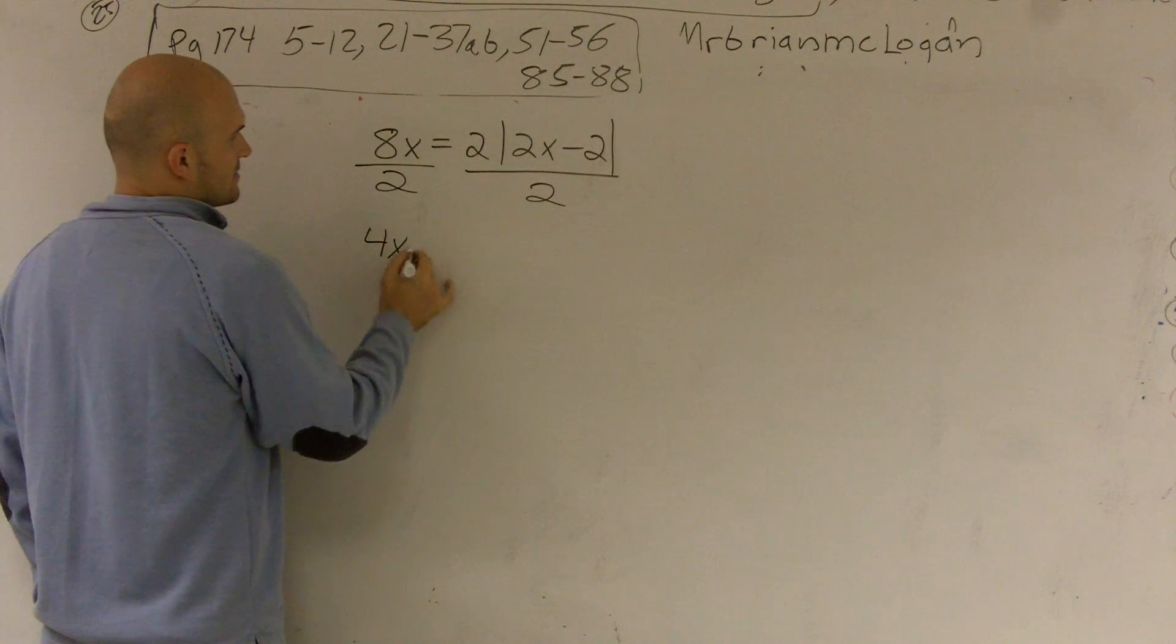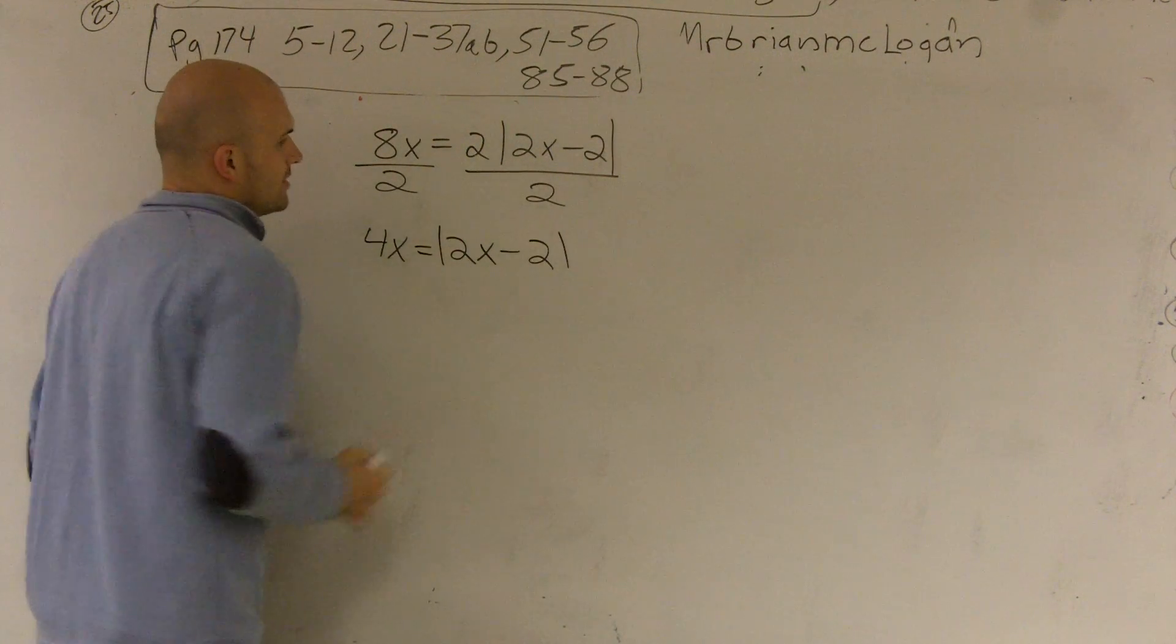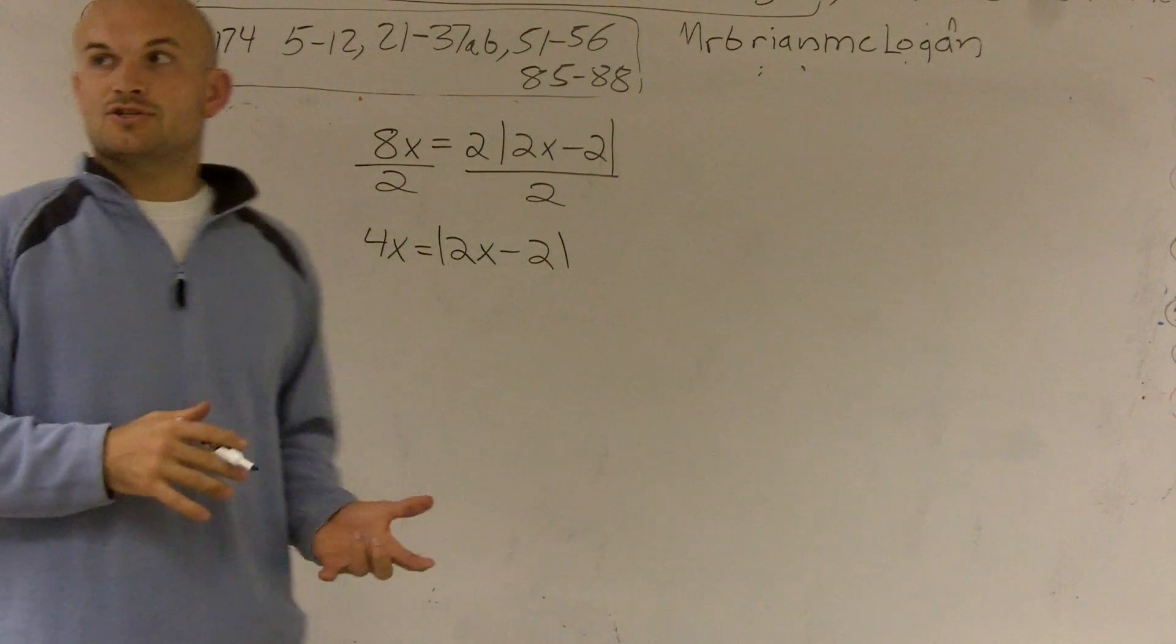Therefore, I get 4x is equal to the absolute value of 2x minus 2. Now remember, this can be broken down into two different ways.